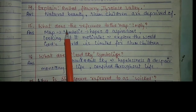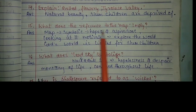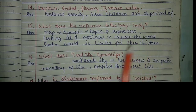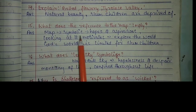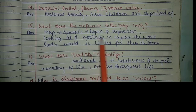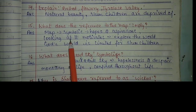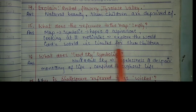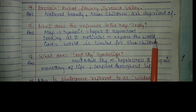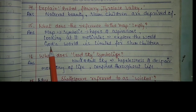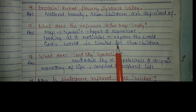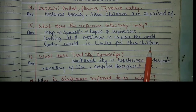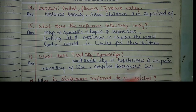Question number 15: What does the reference to the map imply? The map is symbolic of hopes and aspirations, and looking at it, children are motivated to explore the world — the world which is created by God, which is limitless. But slum children are not able to see its beauty.